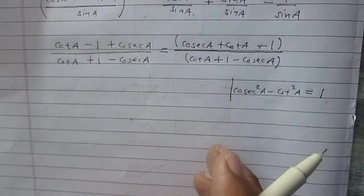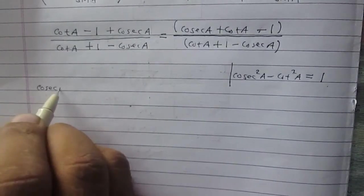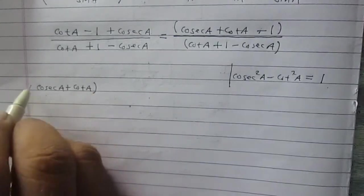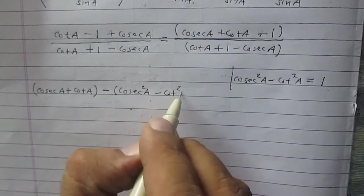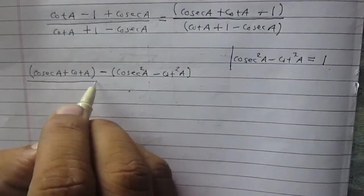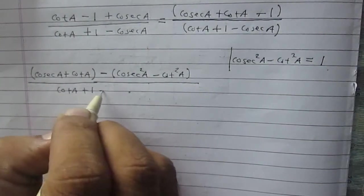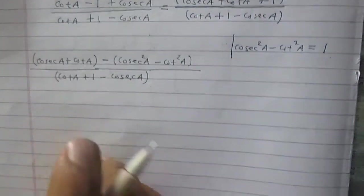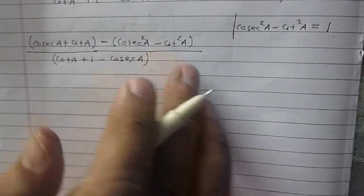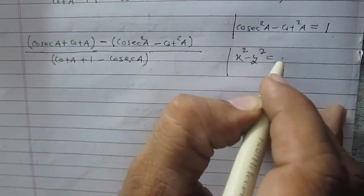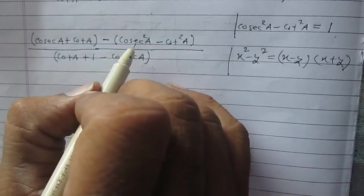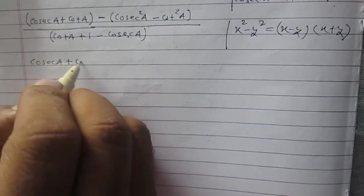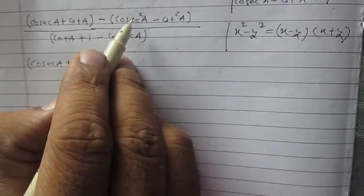Substituting, the numerator becomes cotA plus cosecA minus (cosec²A minus cot²A), with the denominator remaining as cotA plus 1 minus cosecA. Now, cosec²A minus cot²A can be factored using the identity x² minus y² equals (x minus y)(x plus y), giving us (cosecA minus cotA)(cosecA plus cotA).